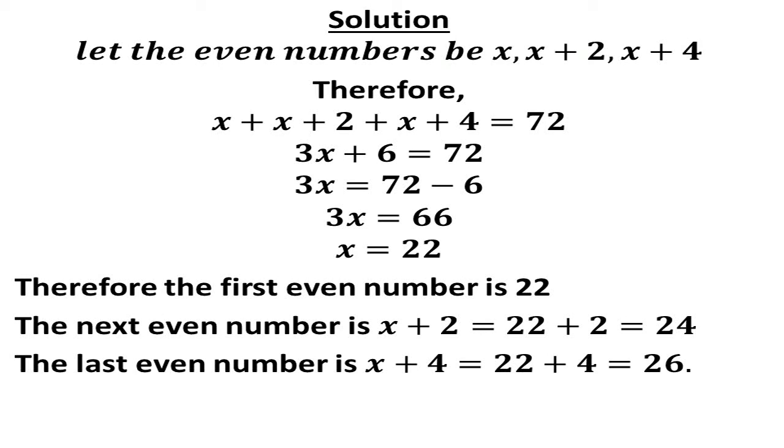Then to get the next even number, we have x plus 4. Our x is 22, that means we are having 22 plus 4, that gives us 26. So if that should be the case now, the even numbers are 22, 24, 26.